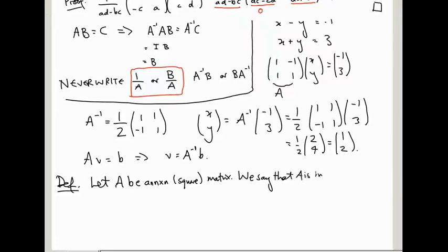if there exists a matrix, A inverse, well actually let me not call it A inverse just yet, if there exists a matrix B such that AB equals BA equals the identity matrix.